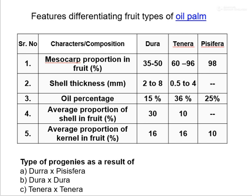Features differentiating fruit types of oil palm: Mesocarp proportion — Dura 35–50%, Tenera 60–96%, Pisifera 98%. Shell thickness — Dura 2–48 mm, Tenera 0.5–24 mm. Oil percentage — Dura 15%, Tenera 36%, Pisifera 25%. Average proportion of shell in fruit — Dura 30%, Tenera 10%. Average proportion of kernels in fruit — Dura 16%, Tenera 16%. Production types: Dura × Pisifera, Dura × Dura, and Tenera × Tenera.